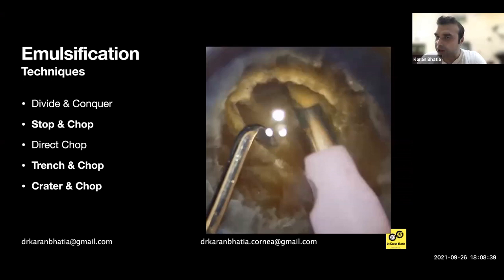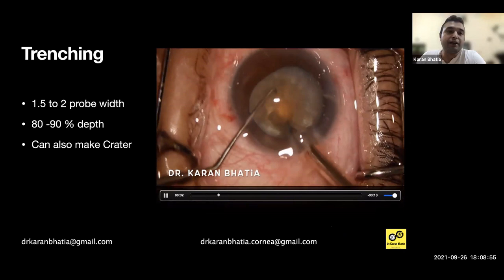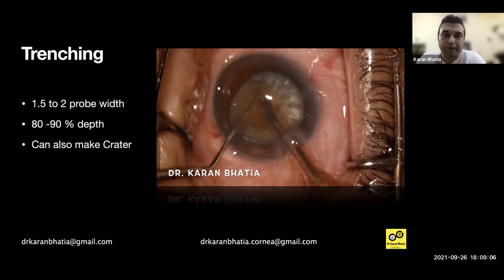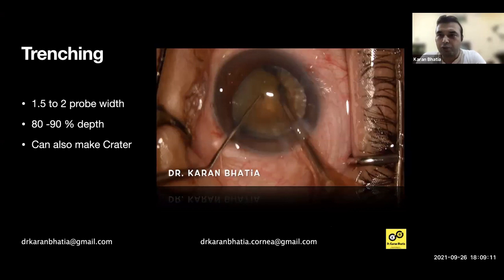Sometimes these nuclei are so hard — particularly because of the leathery nature — that posterior plate separation becomes very difficult. Then you need to modify: do a trench and chop or a crater and chop. The difference is that in trench and chop you create a trench and then do a direct chop; in crater and chop, you create a big crater inside instead. For harder cataracts, you should do around 1.5 to 2 probe widths of trenching, going to about 80-90% depth.